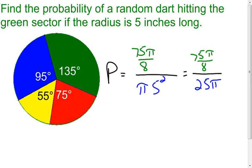What I'm going to do is I'm going to rewrite it as my 75π over 8. But then, division is the same thing as inverse multiplication, so I'm going to multiply by the reciprocal of 25π, which would be 1 over 25π.